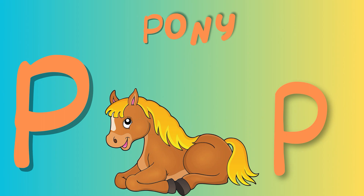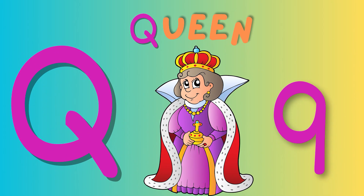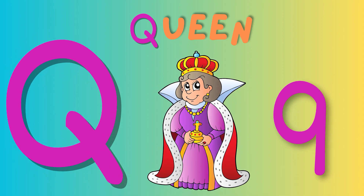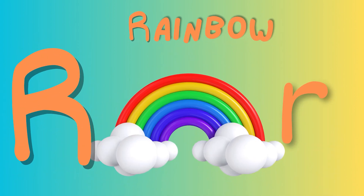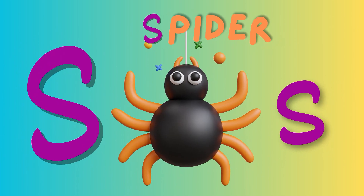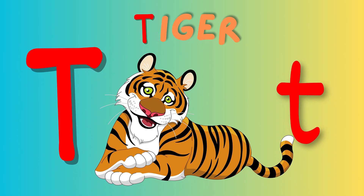P is for pony. Pony, pony. This is a pony. Pony, pony. Q is for queen. Queen, queen. This is a queen. Queen, queen. R is for rainbow. Rainbow, rainbow. This is a rainbow.